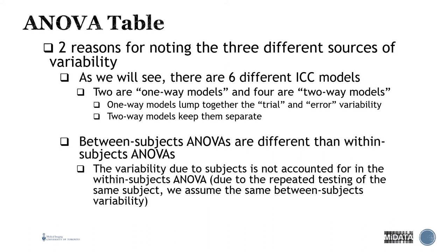There are six different ICC models: two one-way models and four two-way models. The one-way models lump together trial and error variability, whereas the two-way models keep them separate and can include the interaction term. The between-subjects ANOVA differs from the within-subjects ANOVA — variability due to subjects is not accounted for in the within-subjects ANOVA due to repeated testing of the same subject.